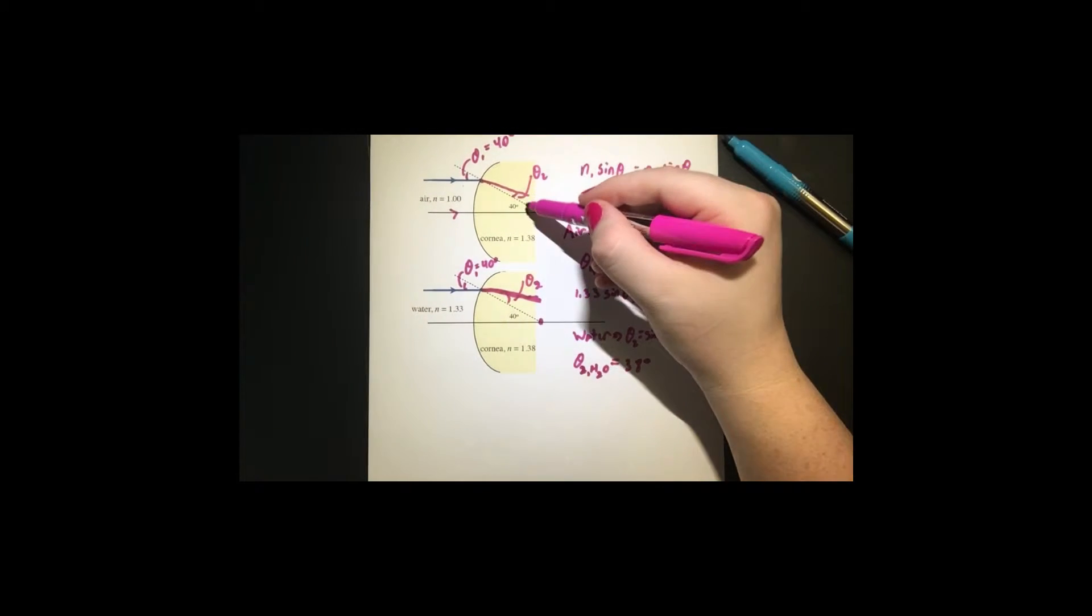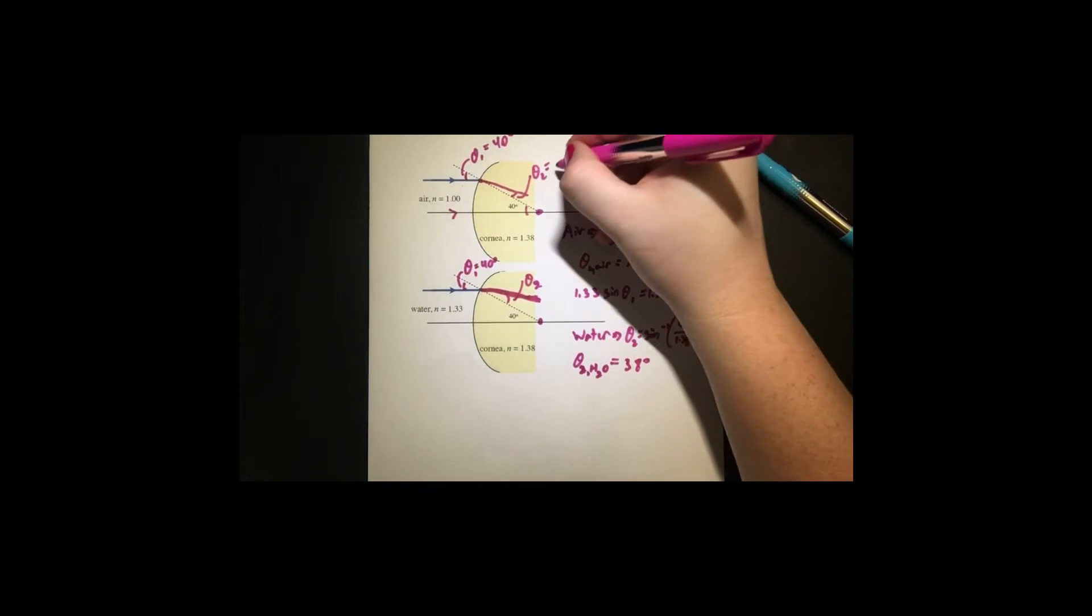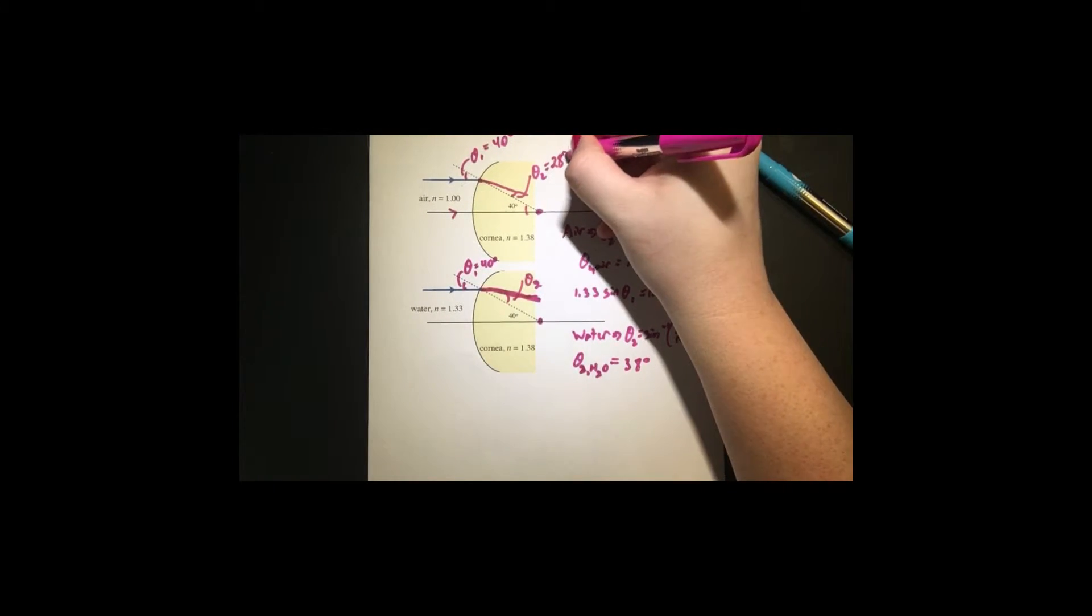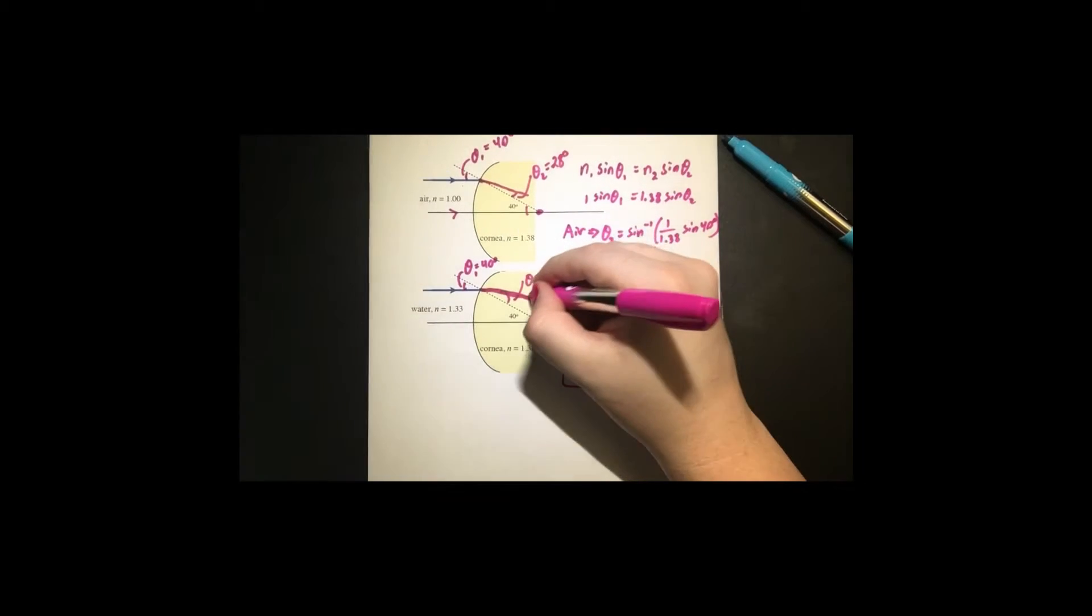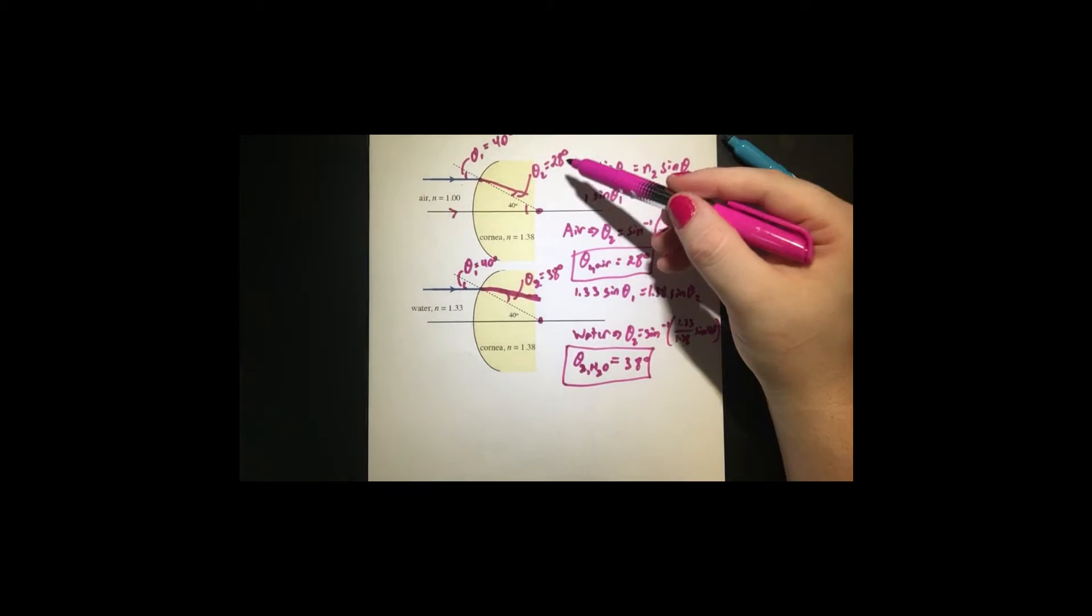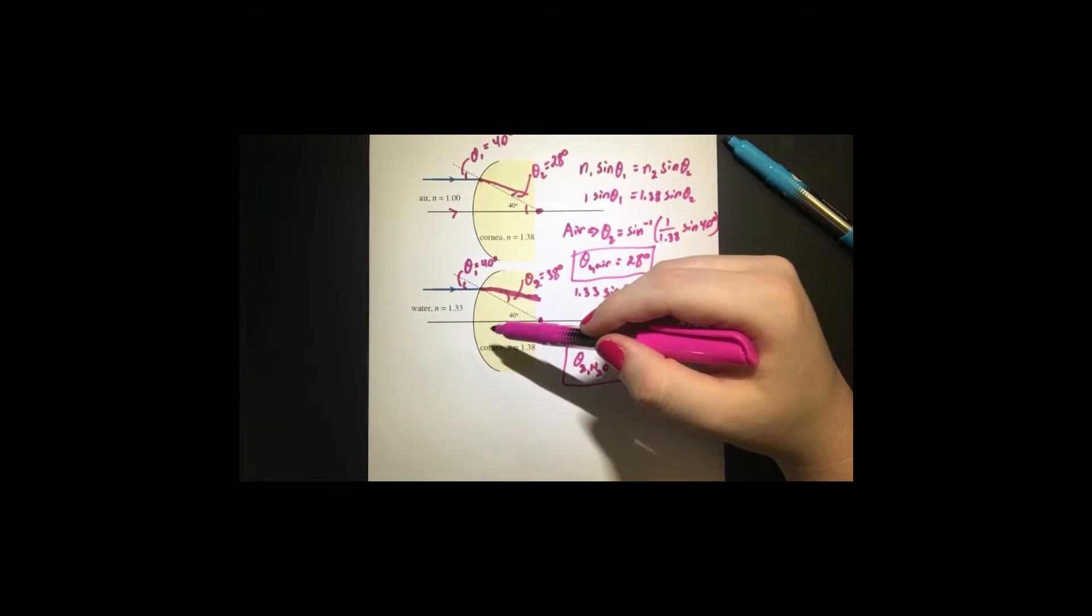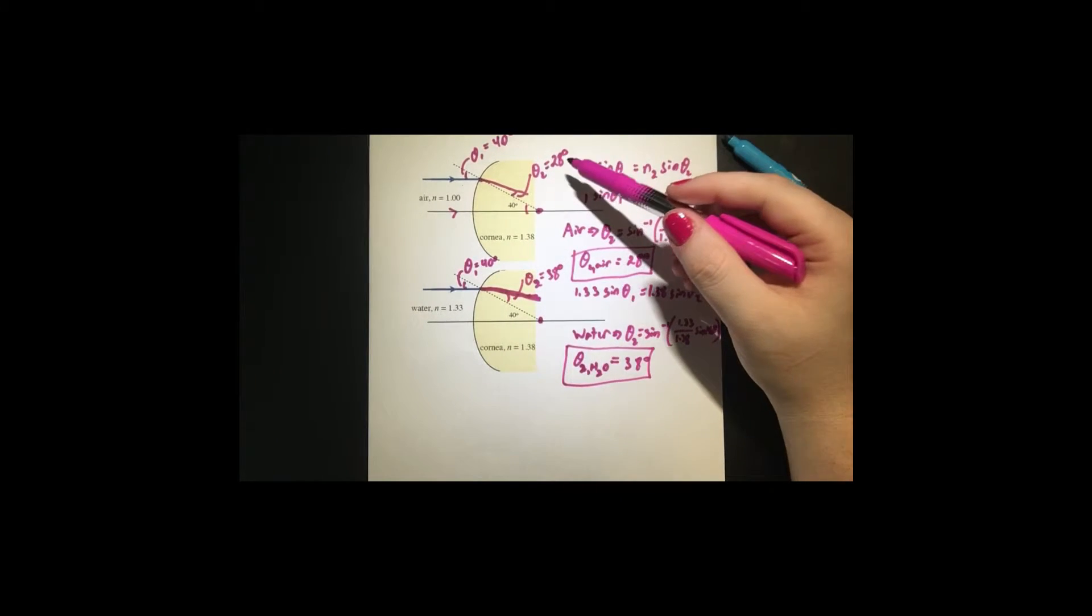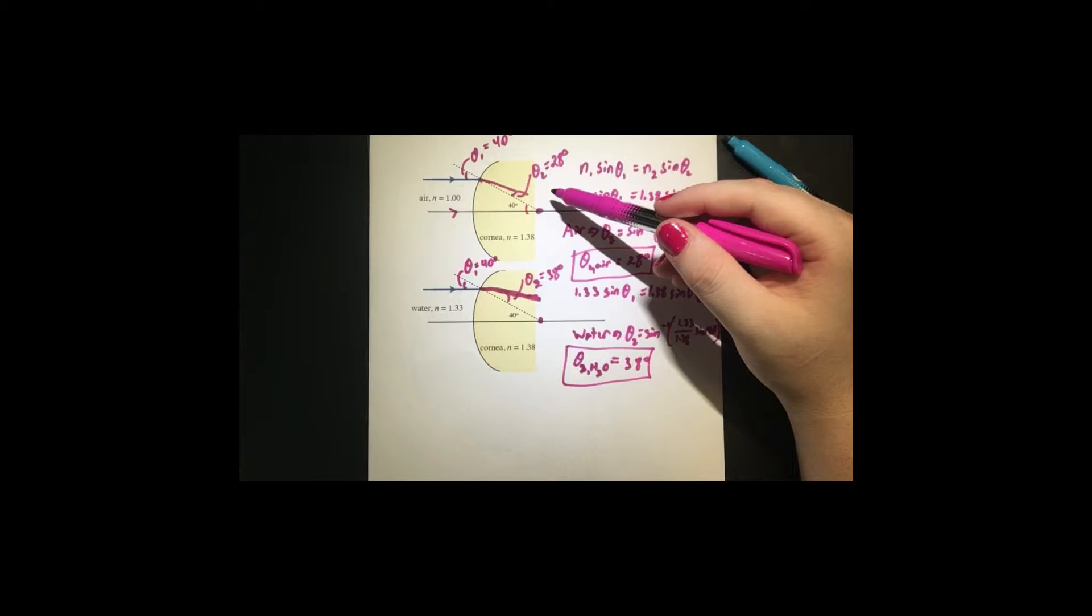So what does that mean? That means the angle from this perpendicular to the surface line or normal to the surface line, theta 2 is 28 degrees away. And theta 2 for water is 38 degrees away. So my guess that the angle for air into the cornea would be lower than the angle from water to the cornea was right. It turns out from using Snell's law, our angle is actually 10 degrees smaller for air to the cornea.